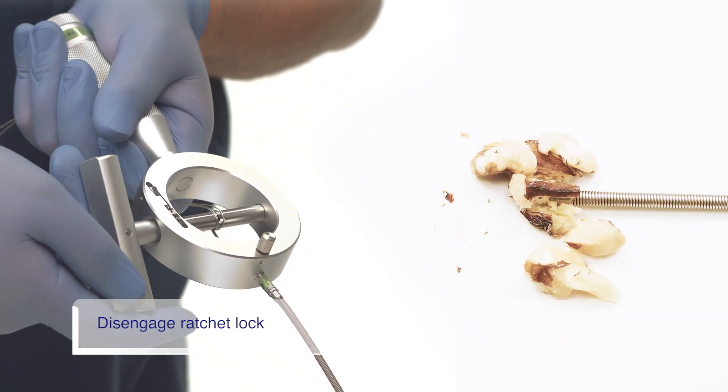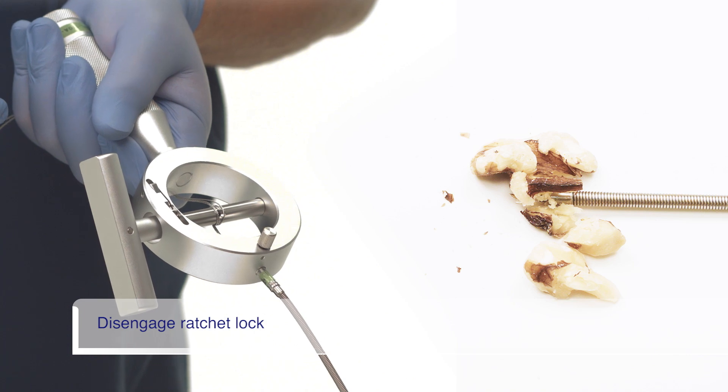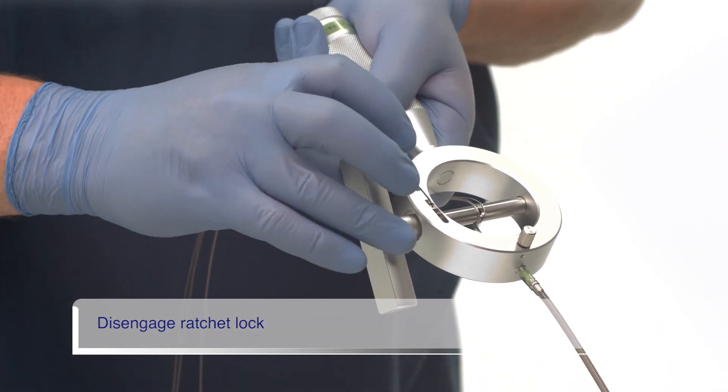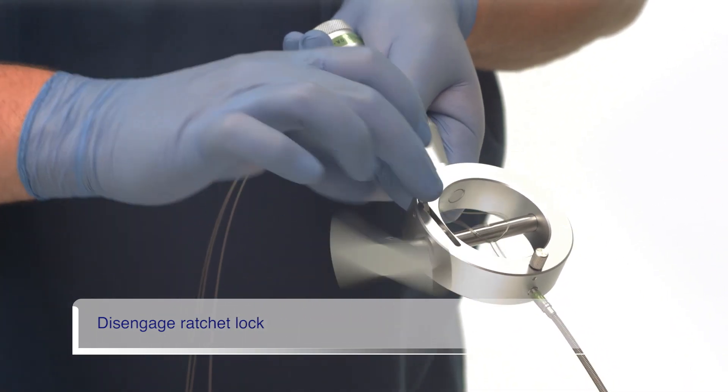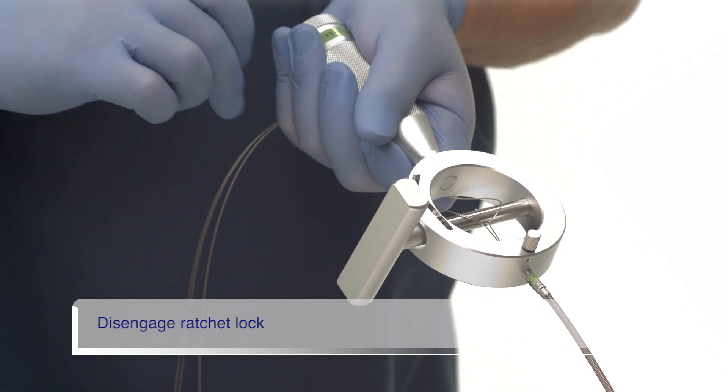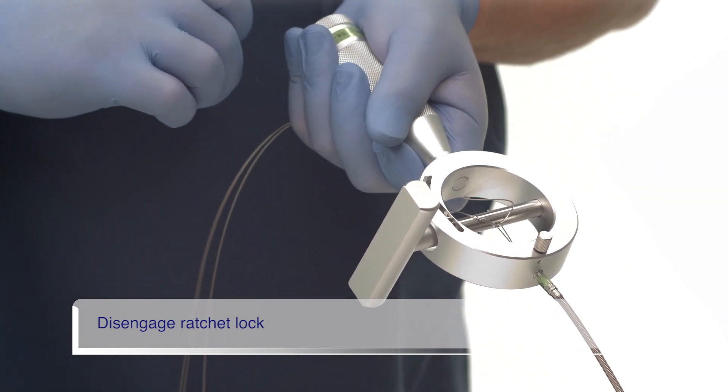Once the stone is crushed or the basket is broken, ensure that you relieve the tension in the coil sheath by disengaging the ratchet prior to removing from the patient. Remove the devices from the patient.